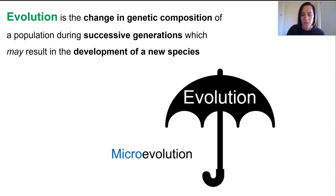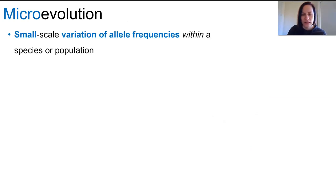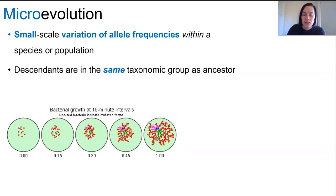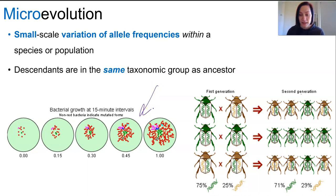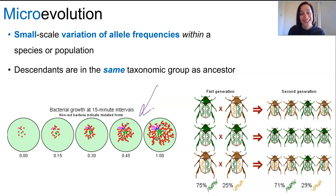Evolution is a broad umbrella term, and under it sits microevolution and macroevolution. Microevolution is the small-scale variation of allele frequencies within a species or population in which the descendant is of the same taxonomic grouping as the ancestor — essentially evolution on a really small scale. It's an outcome of natural selection where the types of alleles in a gene pool change but not so much that they become a new species. For example, antibiotic-resistant bacteria are the same species — they've just picked up a new trait advantageous to surviving in their environment.